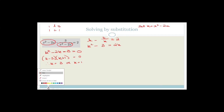Now this is the part where most students make mistakes — they leave this answer and think they're finished. But they didn't ask you to solve for k; they asked you to solve for x. So we need to substitute back. We're going to let k equal 3, so 3 is equal to x squared minus 2x.